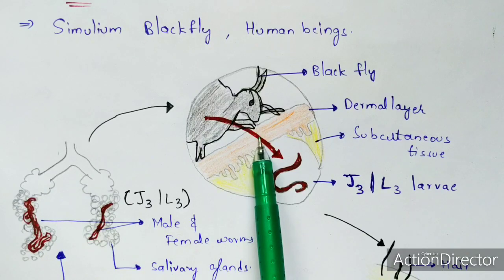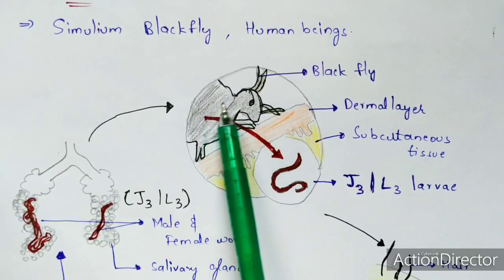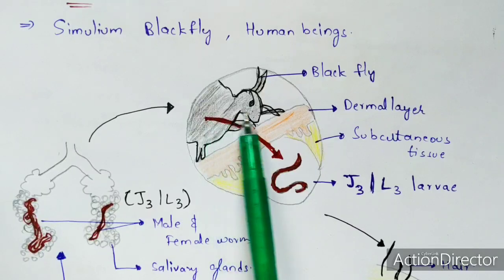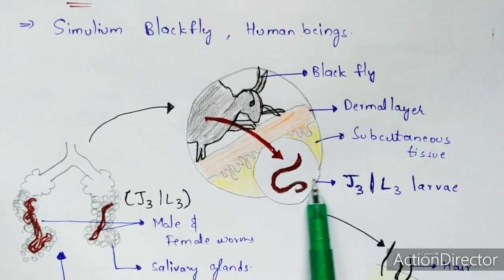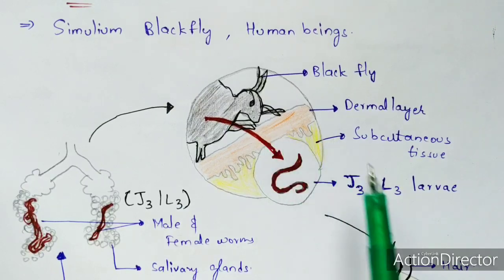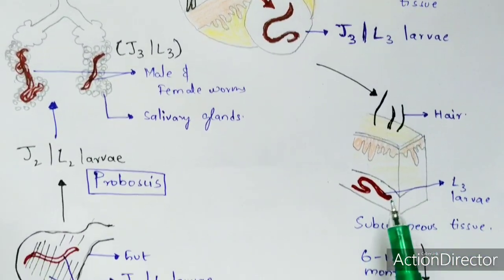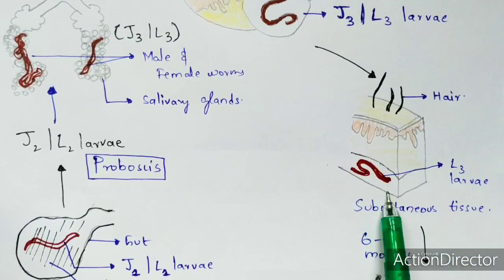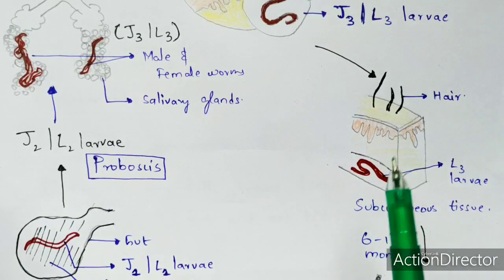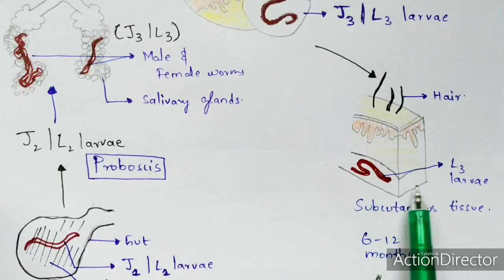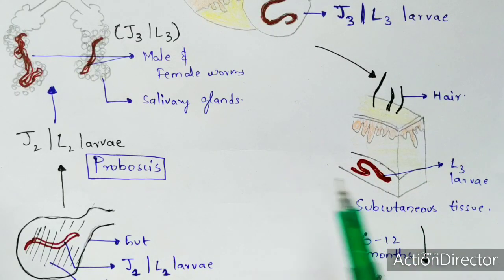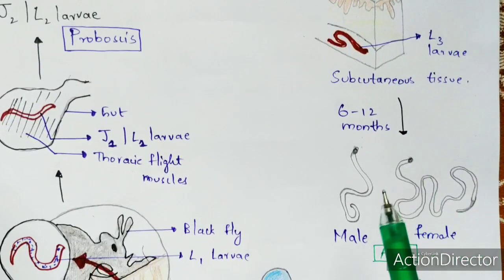When the black fly bites, the J3 or L3 larvae present inside the fly's gut enter the dermal layer and then move into the subcutaneous tissue, where they settle.